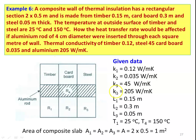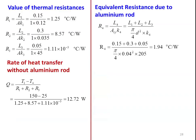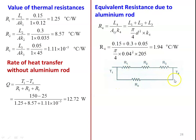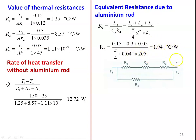When the aluminum rod is inserted, it becomes a parallel resistance R4. R4 = L4/(A_rod × K4), where L4 = L1 + L2 + L3 = 0.15 + 0.3 + 0.05 = 0.5 m, and A_rod = (π/4) × (0.04)². Substituting: R4 = 0.5 / ((π/4) × 0.04² × 205) = 1.94°C/W.